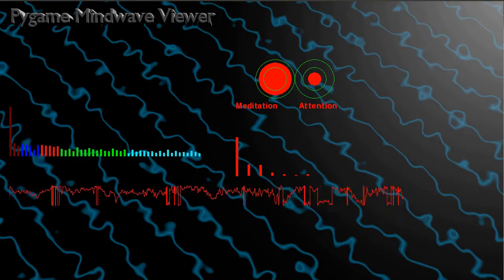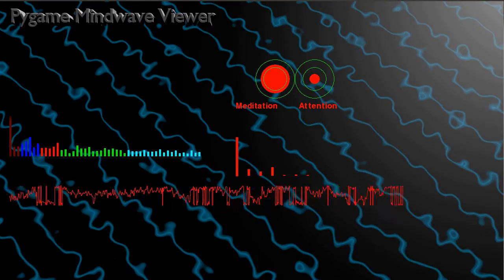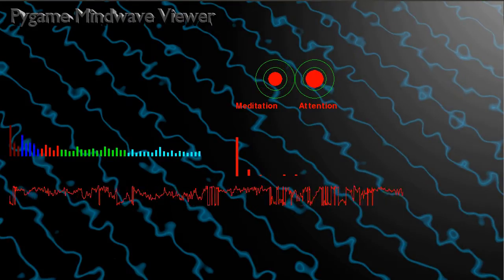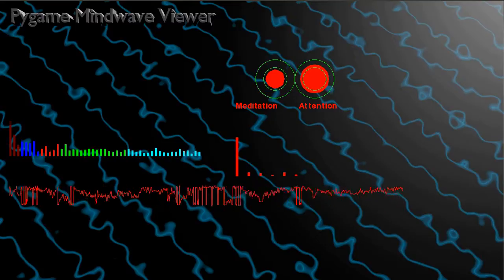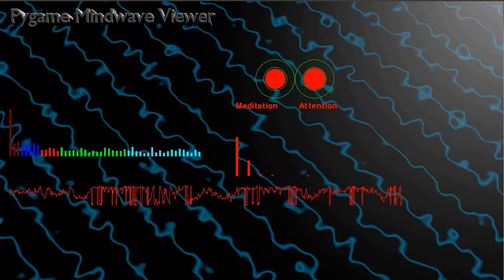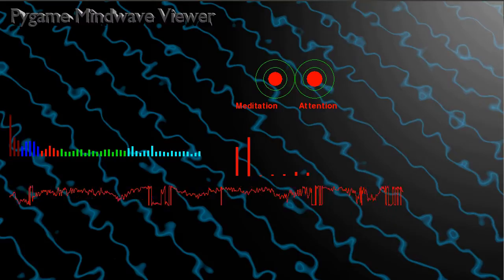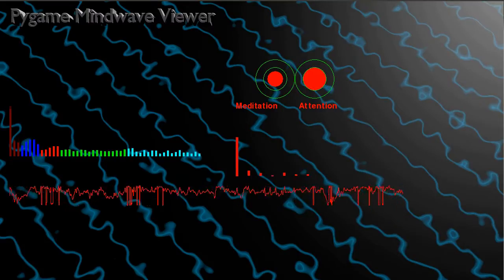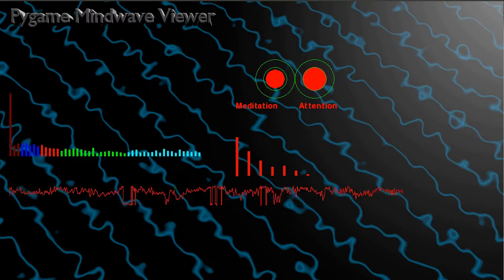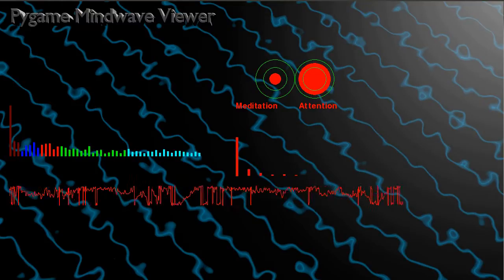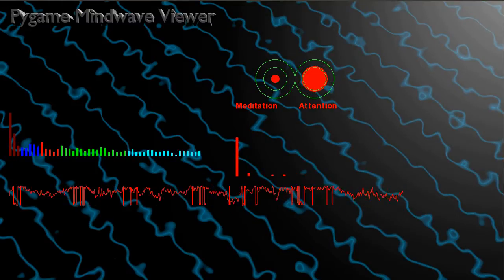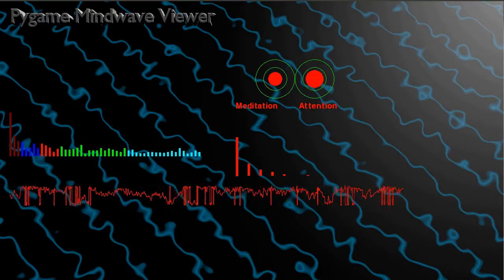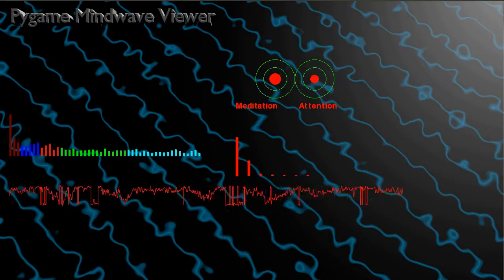The NeuroSky MindWave is a consumer EEG device that consists of a headset and USB dongle. The headset can measure EEG brainwaves on the skin of the skull and it transmits these values to the computer.